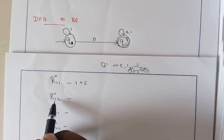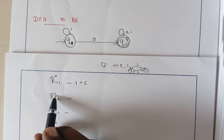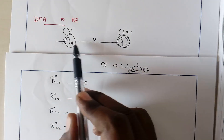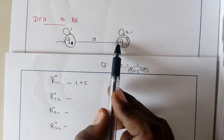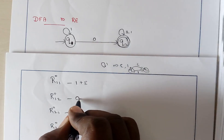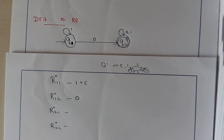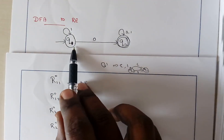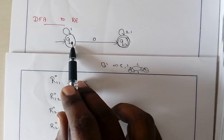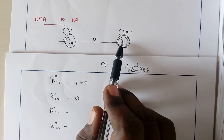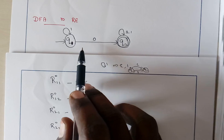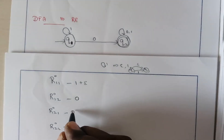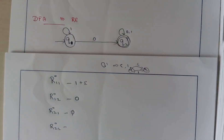R12 of 0 represents the transition from Q1 to Q2 without any intermediate node. From state Q1 to Q2, we have a direct transition and the input is 0, so we write 0 here. Next, for R21 of 0, from state 2 to 1, there is actually no transition at all — there is no looping condition. From 1 to 2 we have a transition, but from 2 to 1 we don't have any transition.